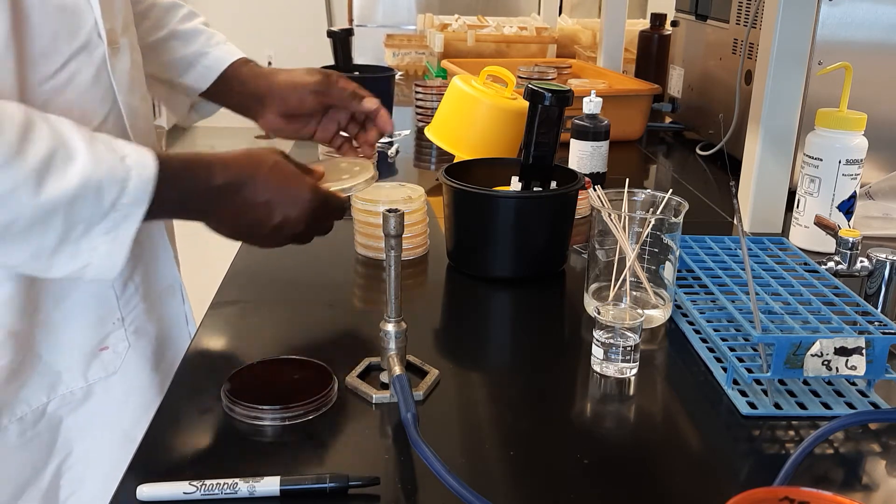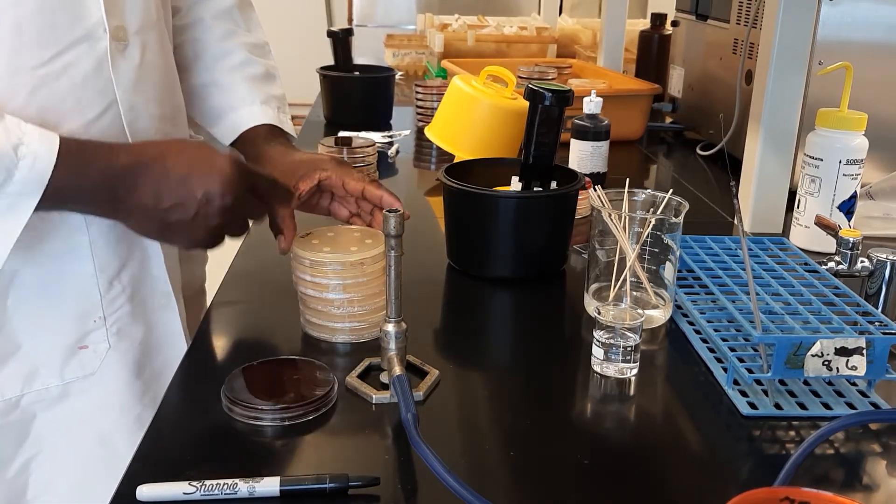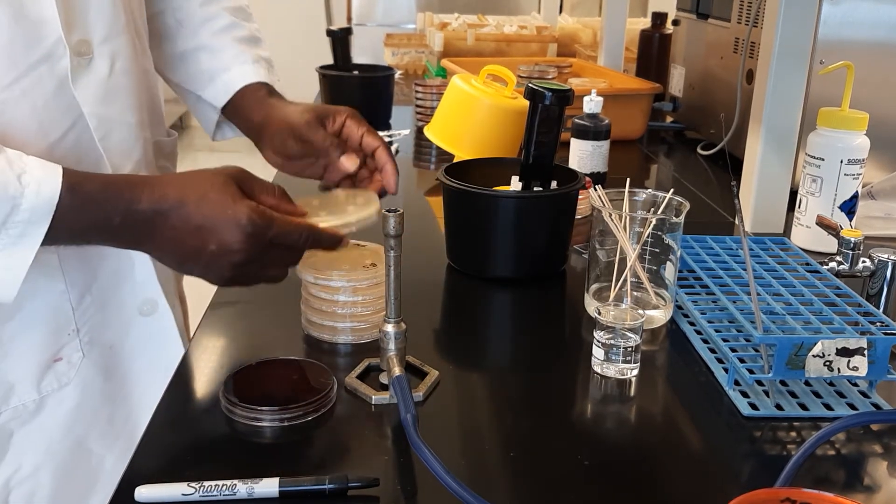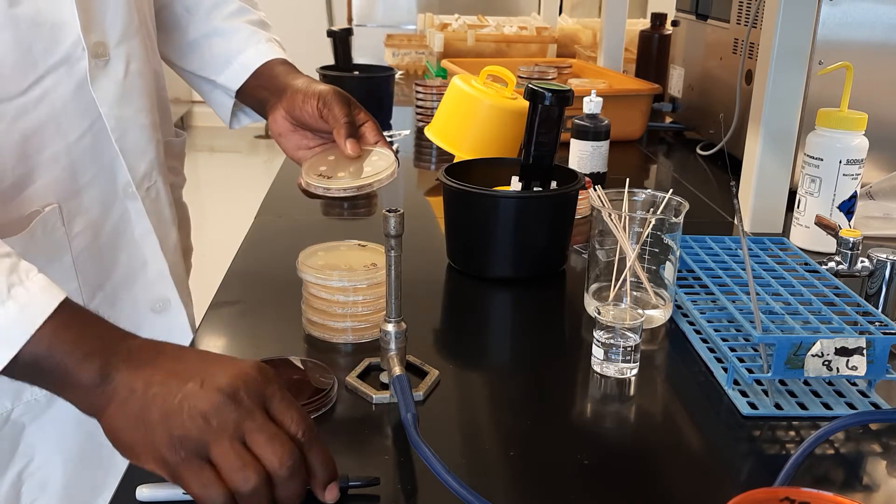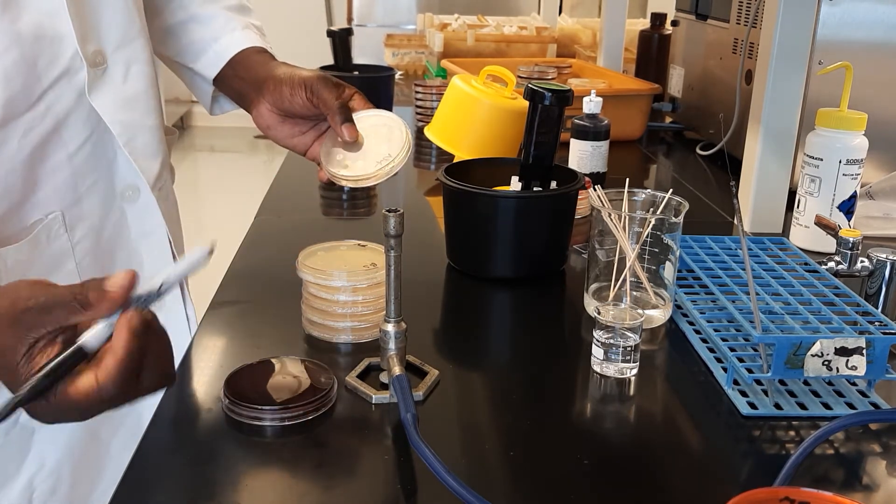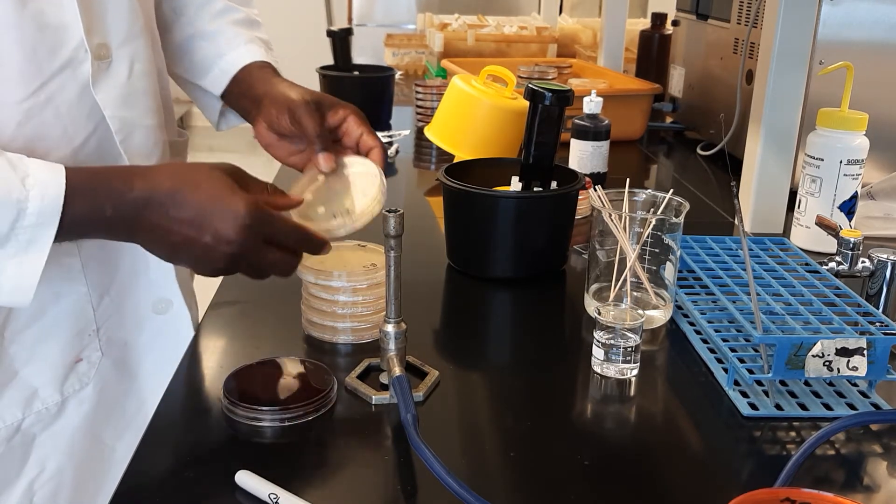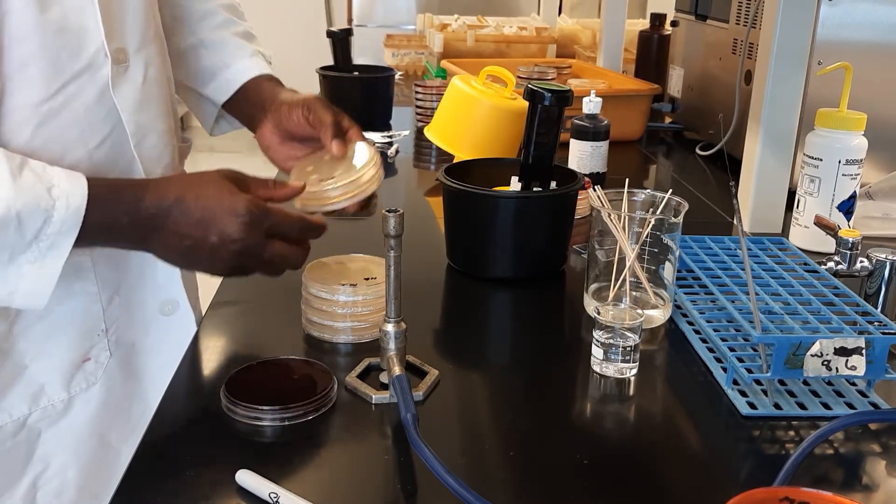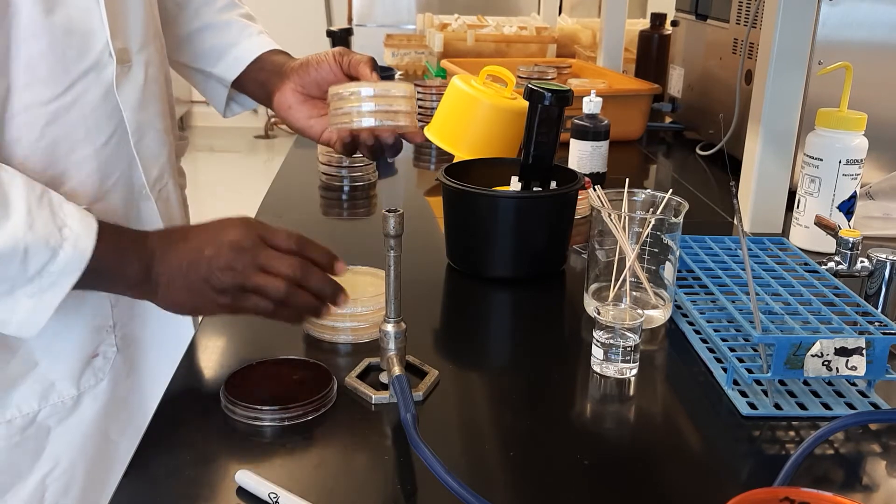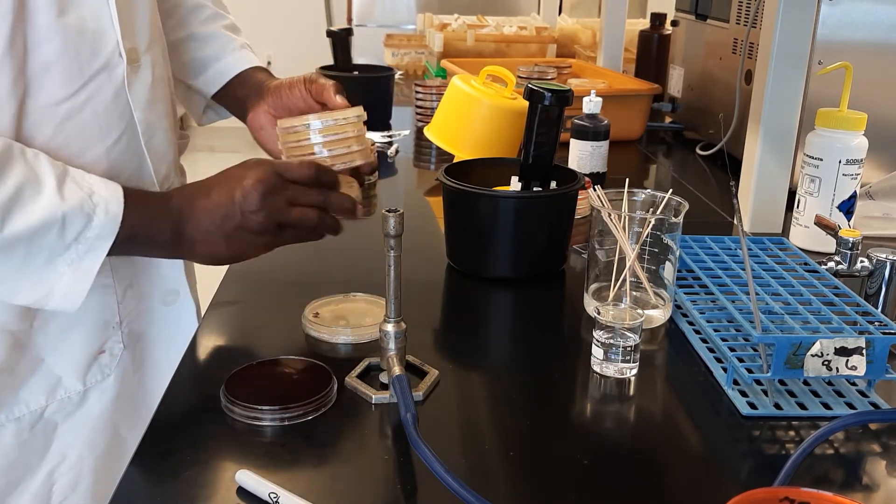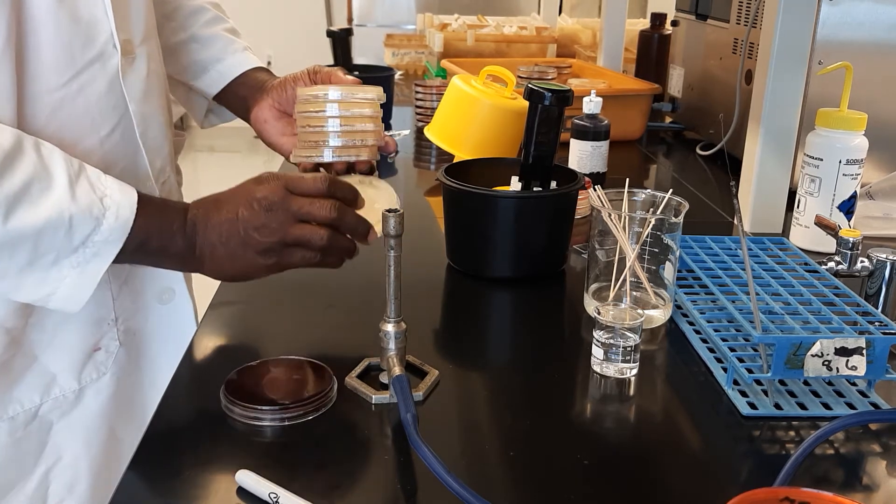Now that we have applied the disc, the next thing is to incubate. I did that previously, so now we should be able to see the effect of—actually, let me write BS for Bacillus subtilis. So we should be able to see the effect of these antibiotics on Micrococcus, Bacillus subtilis, Pseudomonas, Staph aureus, and E. coli.